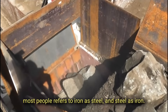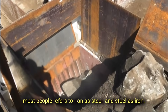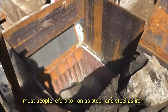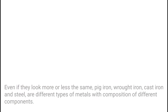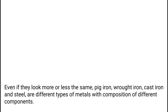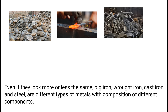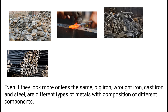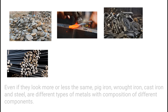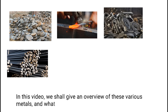Most people refer to iron as steel, and steel as iron. Even if they look more or less the same, pig iron, wrought iron, cast iron, and steel are different types of metals with compositions of different components. In this video, we shall give an overview of these various metals and what differentiates them from each other.